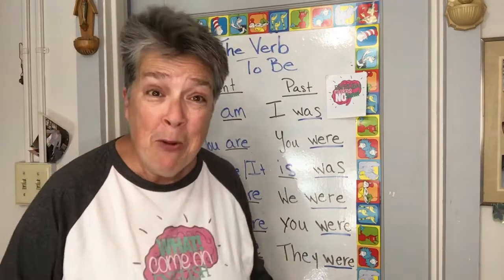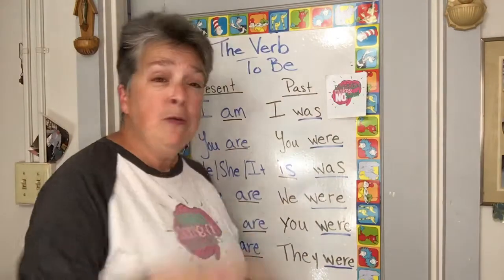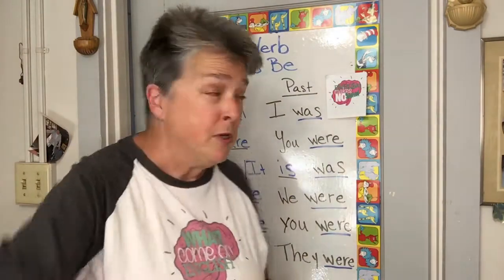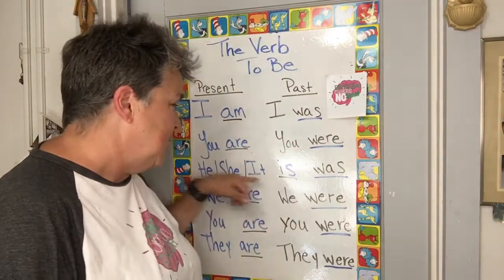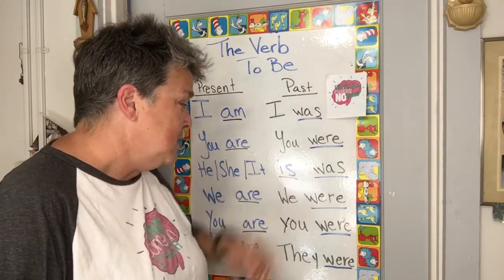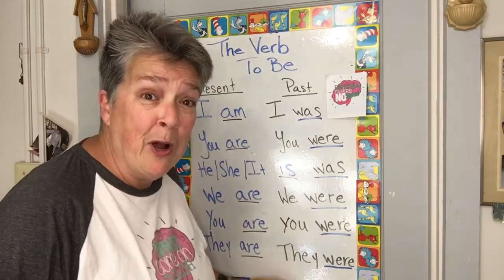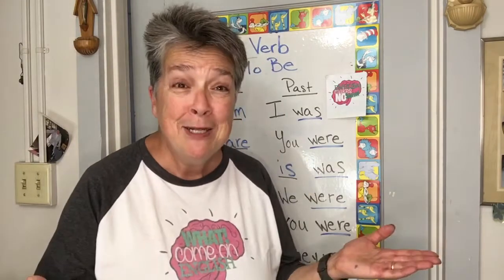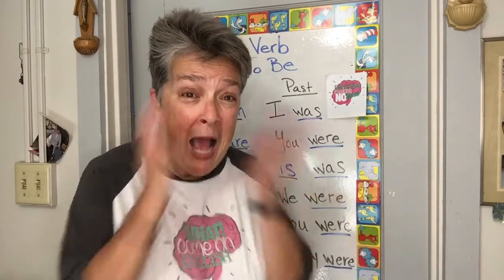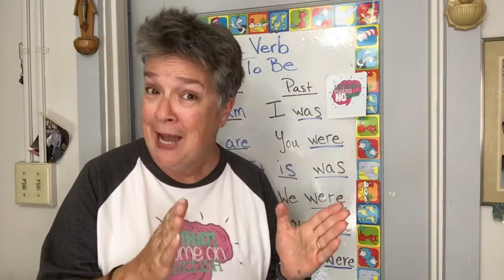You know the best part about past tense? You only have to remember two words: I was, he was, she was, it was — and then you were, we were, you were, they were. A lot of 'were' and a little 'was.' Why is there no 'be'? Because in the present and past tense, they never go together. Got it?